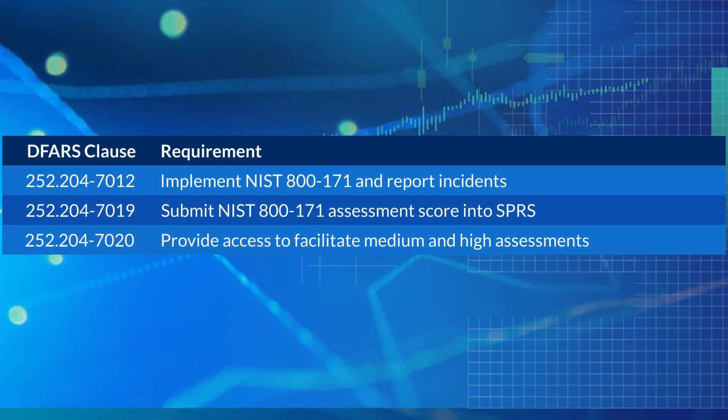Let's summarize. DFARS 7012 requires the implementation of NIST 800-171 and provides incident reporting requirements. DFARS 7019 requires the submission of an assessment score into SPIRS. 7020 requires the contractor to provide the government access to facilities, systems, and personnel to facilitate medium and high assessments.